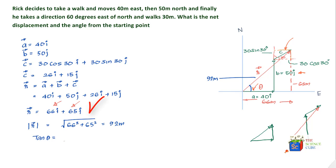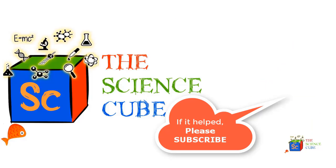So tan theta is equal to 65 upon 66. In which case, if you take the inverse of this value, tan inverse of this value, theta is equal to tan inverse 65 over 66, which gives theta as 44.57 degrees.